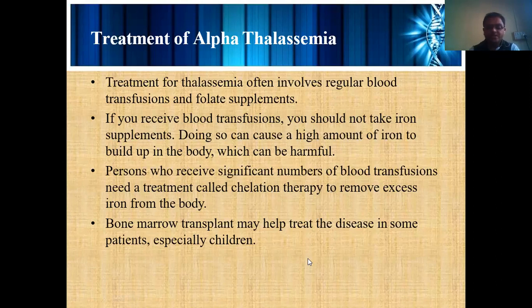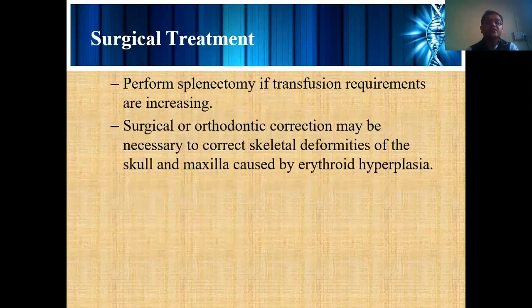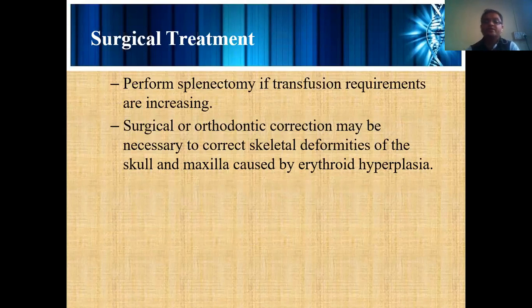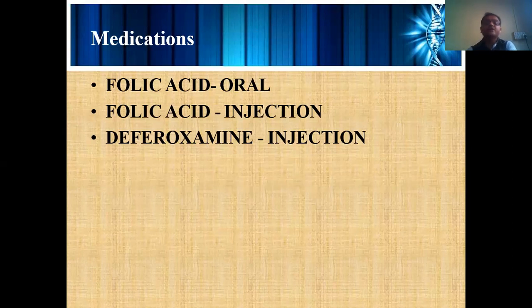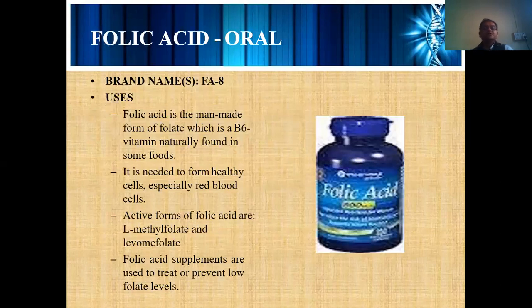For surgical treatment, splenectomy may be performed if regular transfusions become increasingly required. Surgical orthodontic correction may be necessary to correct skeletal deformities of the skull and maxilla caused by erythroid hyperplasia. Medications used include folic acid, folic acid by injection, and other available treatments, with folic acid being the most common.